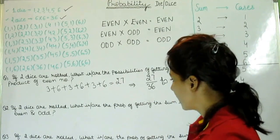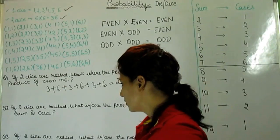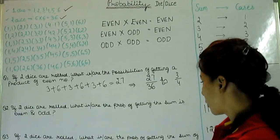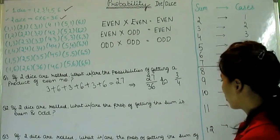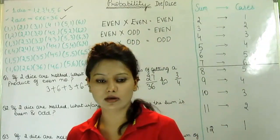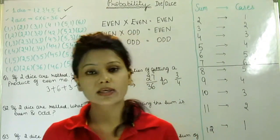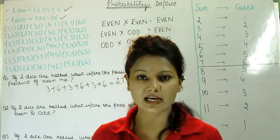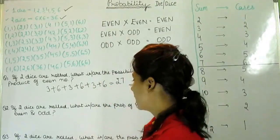Next question is, if two dice are rolled, what is the probability, possibilities of getting the sum is even and odd? If I have rolled two dice, then what is the possibility that they will be even or odd? We will give you all the possibilities.